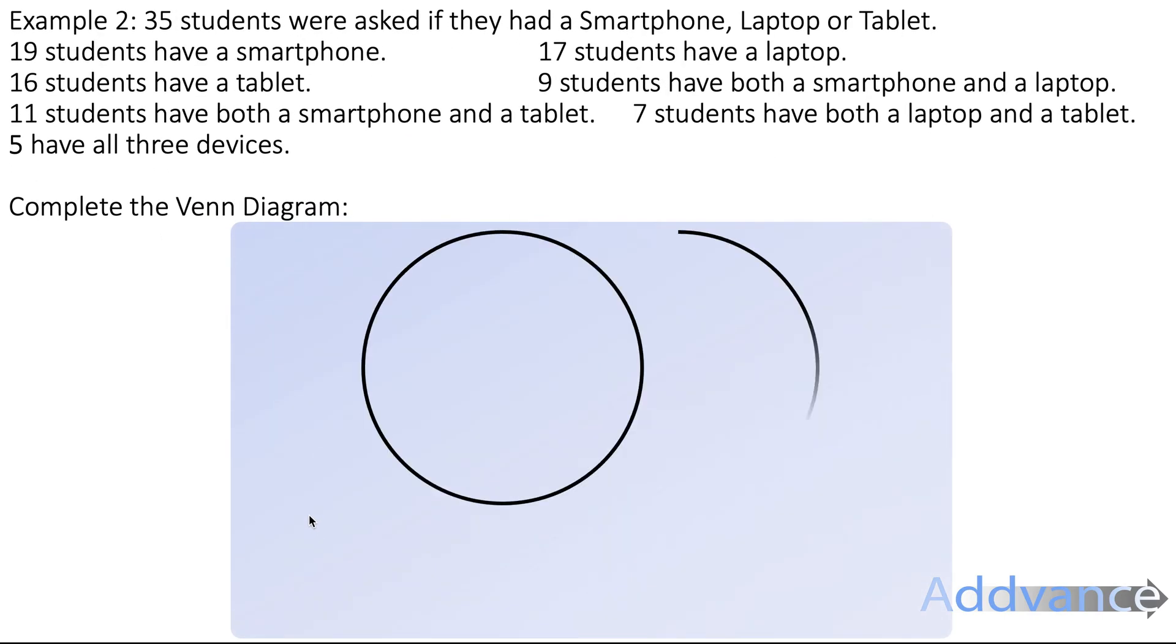So the Venn diagram will look like this. Where it's got 3 circles and they overlap like this. We have to make sure they overlap in this pattern here. So whenever you've got 3 separate groups, draw the circles like this. We're going to start by seeing that 5 people have all 3 devices. So 5 people have a smartphone, a laptop and a tablet. 5 will go in the centre overlap.